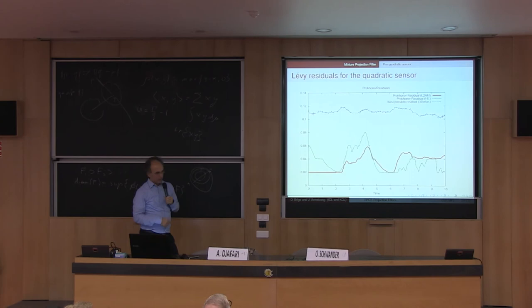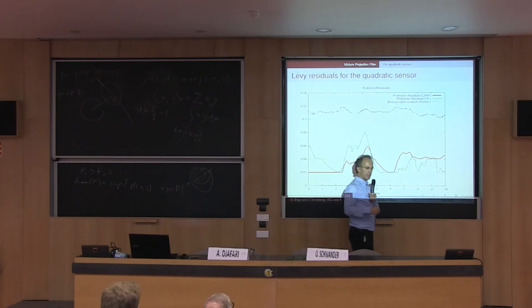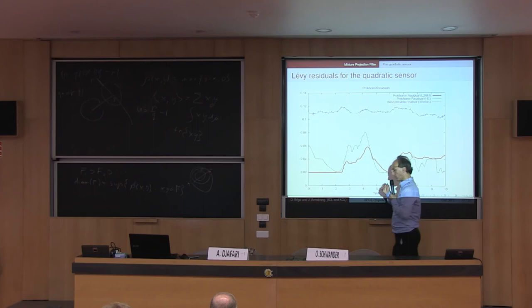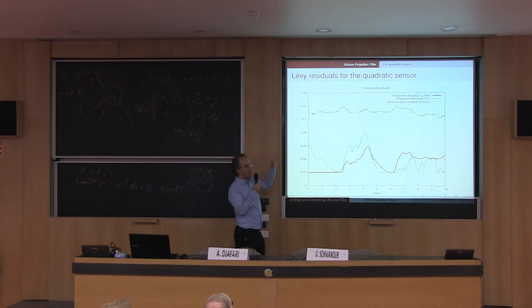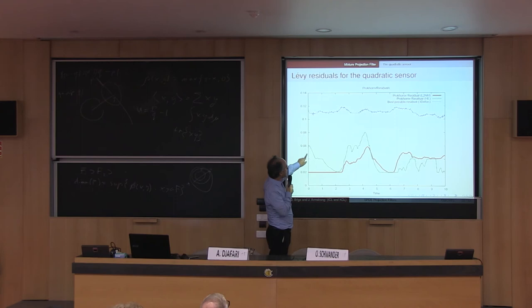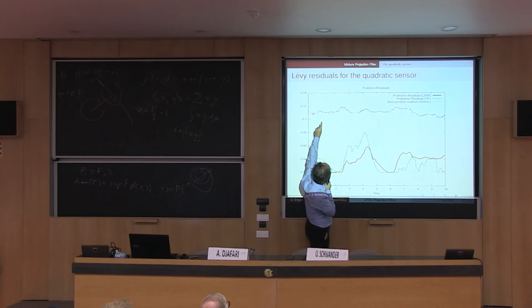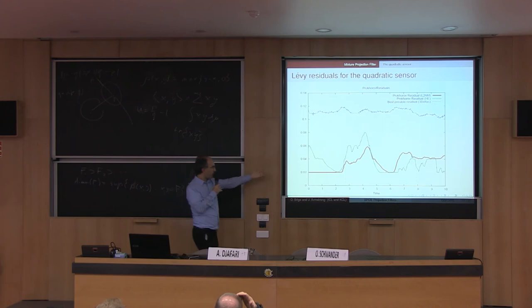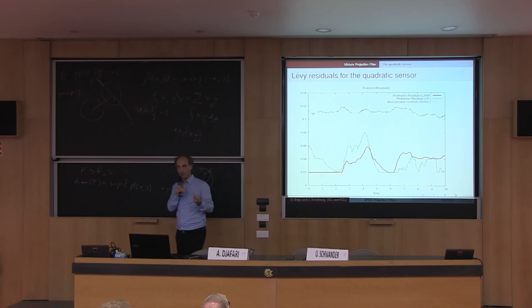We also did a comparison with particle methods. We designed a linear combination of three Dirac masses with two combinators, using the Lévy-Prokhorov metric since the Hellinger distance doesn't work well with singular measures. We still see that the projection filter with exponential and mixture families does much better than the best particle filter with the same number of parameters. Of course, if you increase the particles to a very large number, you can beat these filters — but then your algorithm will not run in real time.